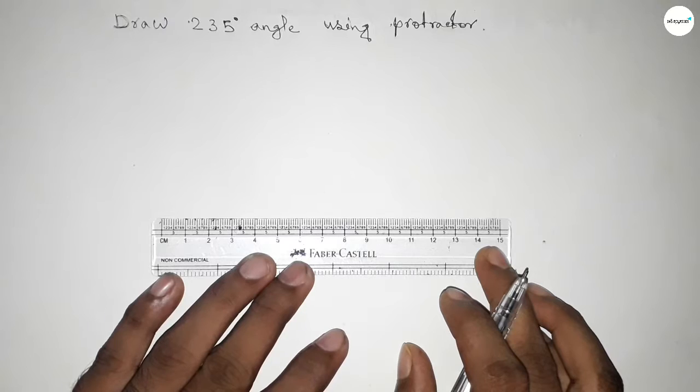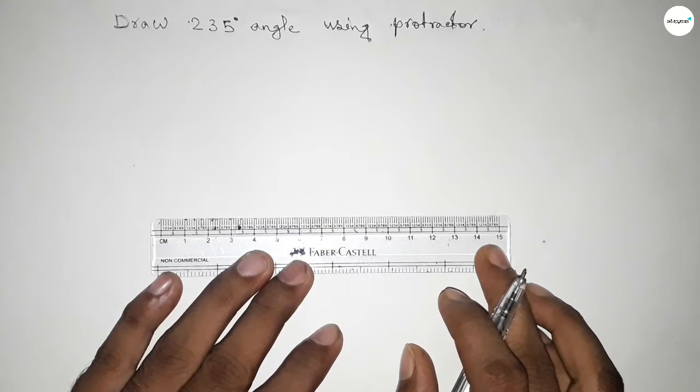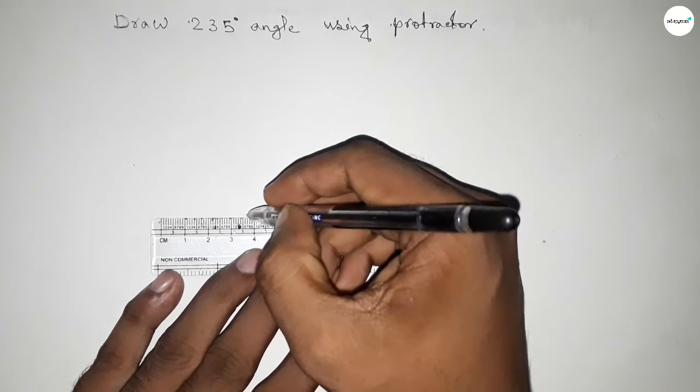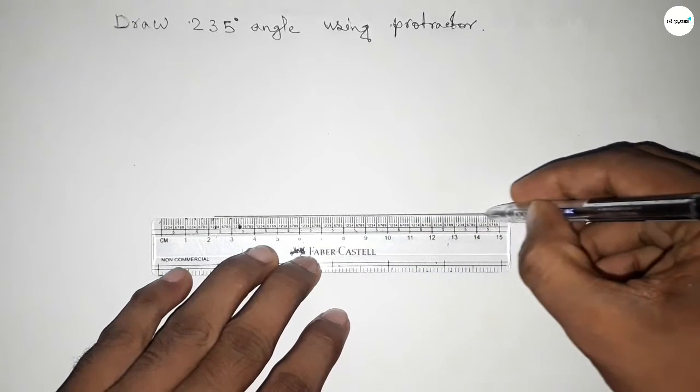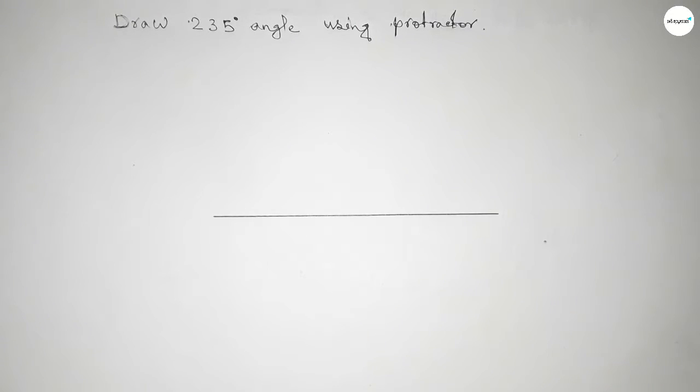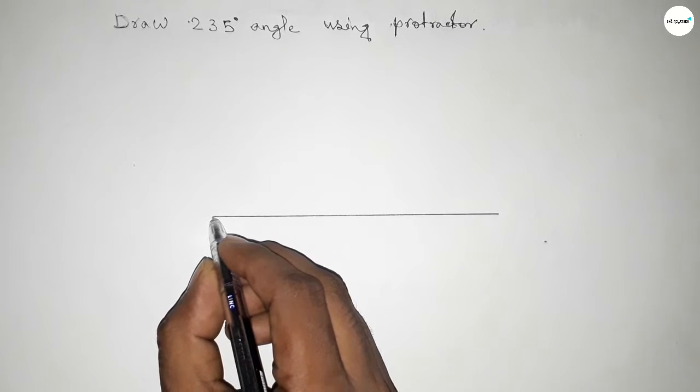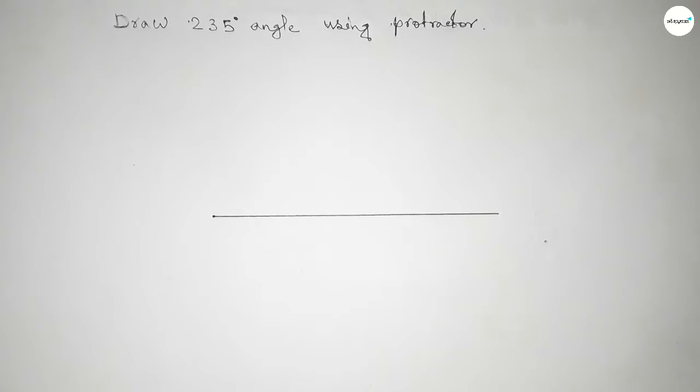Here a line of any length. So first drawing a line here. Next, pointing out here to draw 235 degree angle on this point.